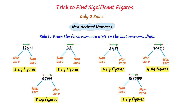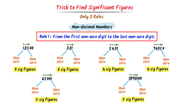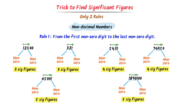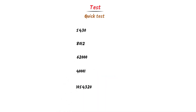Thus, remember that in case of non-decimal numbers, we go from the first non-zero digit to the last non-zero digit. Using this trick, we can easily find significant figures in any number. Note down this important rule. Now I will take a quick test — consider these numbers. Pause the video and find the total significant figures.